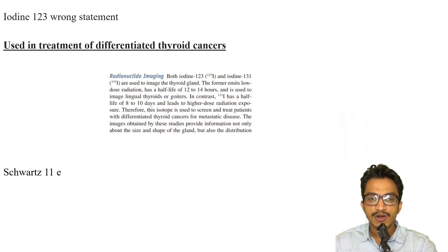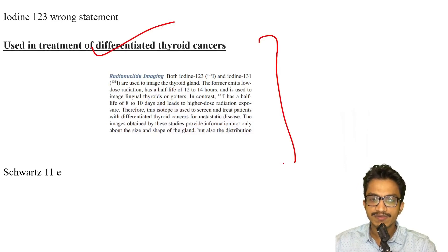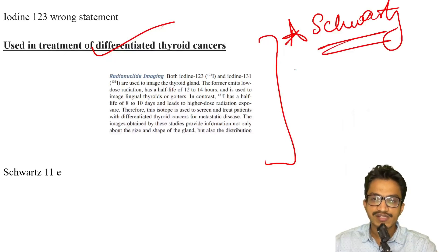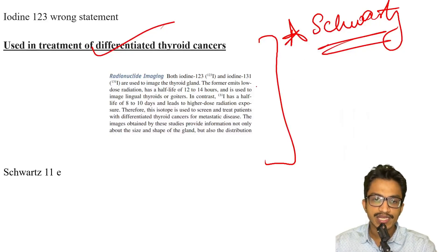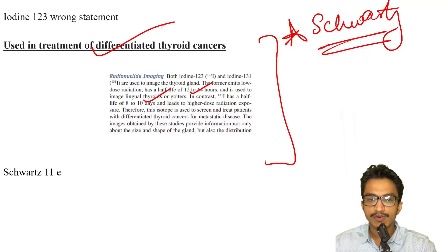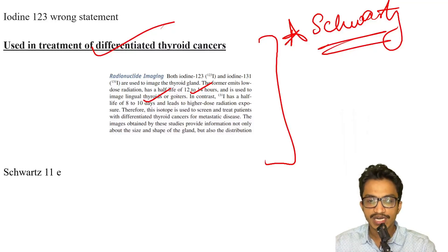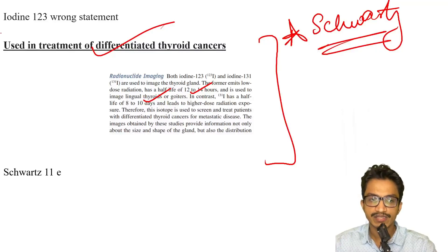Regarding iodine-123: the wrong statement is that it is not used for treatment of differentiated thyroid cancer (DTC). Questions on thyroid and breast have been covered from Bailey's Shorts. Iodine-123 has a half-life of 12 to 14 hours and is used for imaging of lingual thyroid or goiters. Iodine-131, with higher dose radiation, is used to treat differentiated thyroid cancer — not iodine-123.